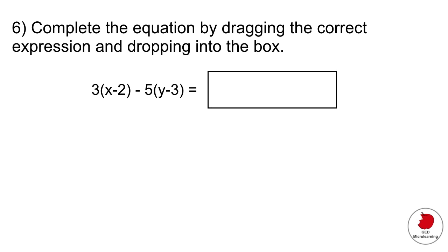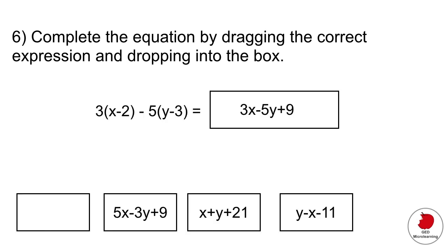For this drag-and-drop problem, multiply out the expression, then simplify by subtracting 6 from 15. You end up with the simplified number, then click on the correct box and drag it to its place.